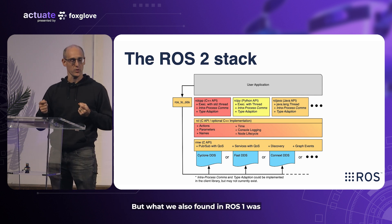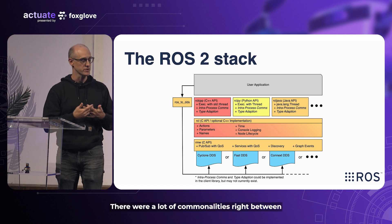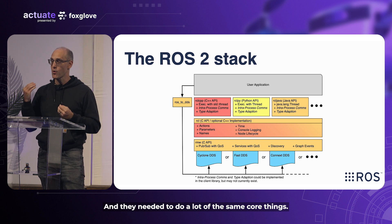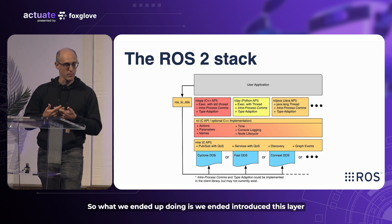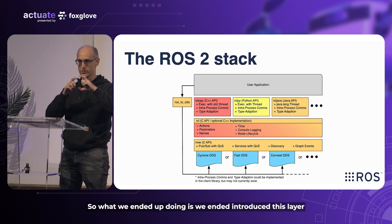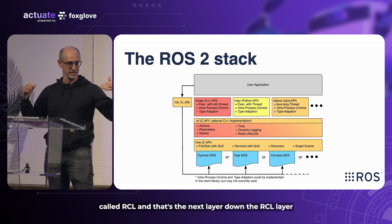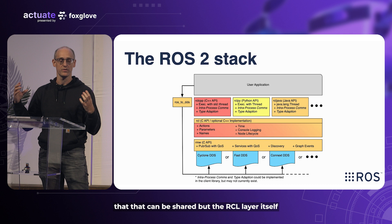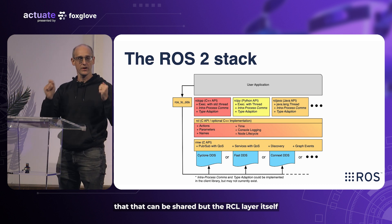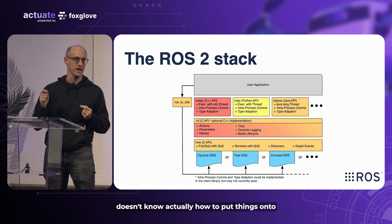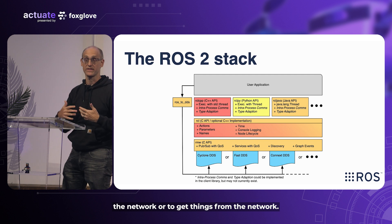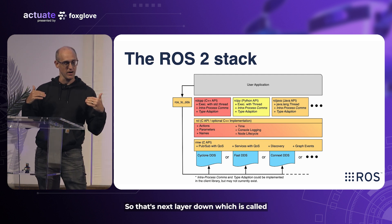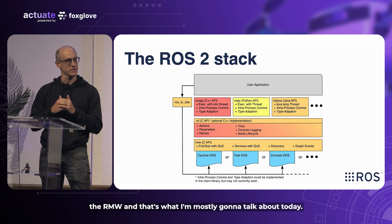What we also found in ROS1 was that there were a lot of commonalities between the C++ and Python implementations — they needed to do a lot of the same core things. So we ended up introducing a layer called RCL, which is the next layer down. The RCL layer introduces common concepts and shared code. But the RCL layer itself doesn't actually know how to put things onto the network or get things from the network. That's the next layer down, called the RMW, which is what I'm mostly going to talk about today.